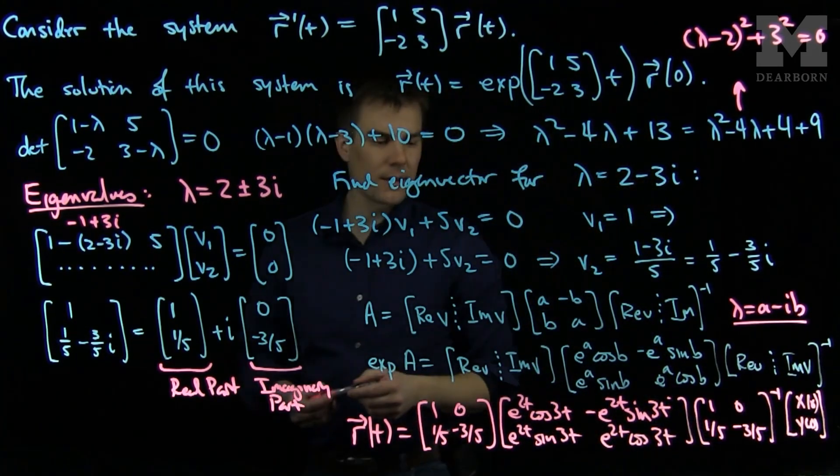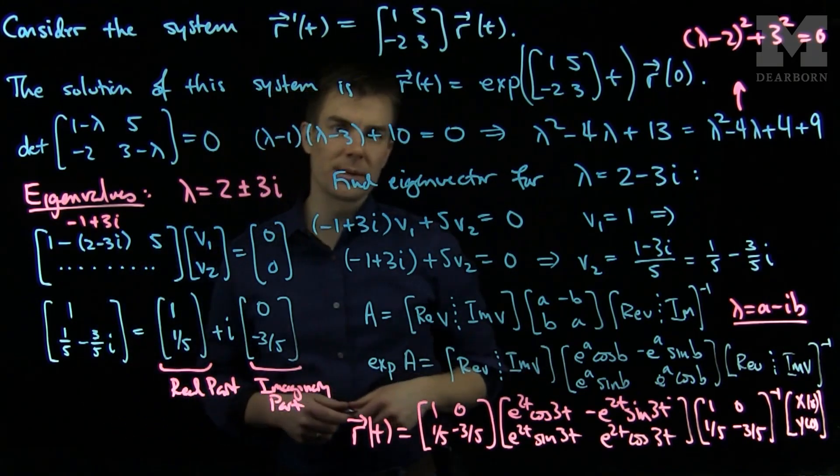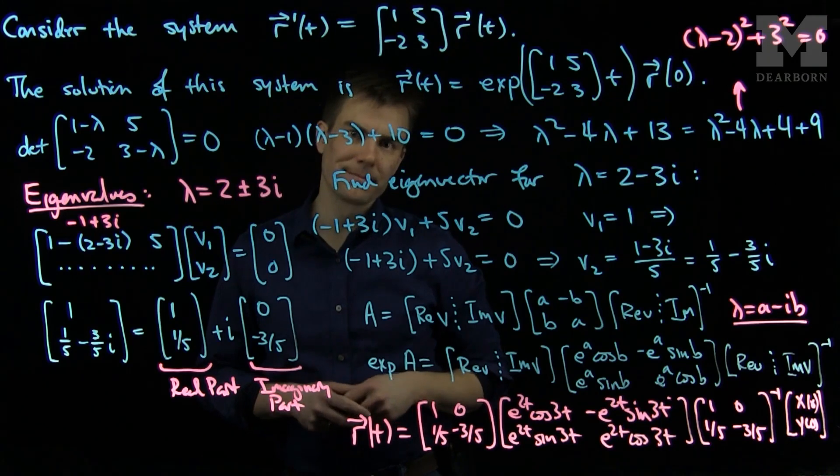So by finding the complex form of my matrix exponential, I am able to solve a system that has complex eigenvalues. Thank you very much.